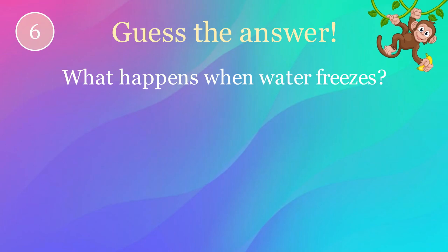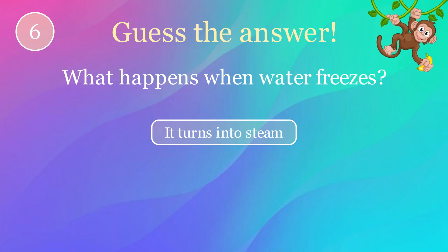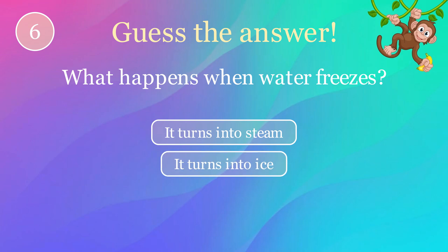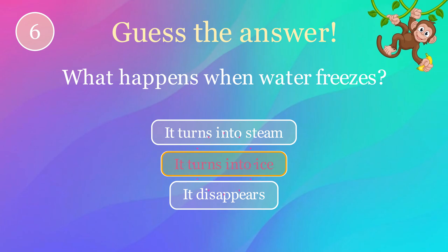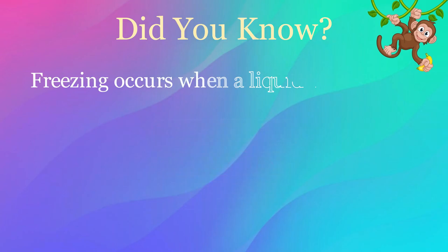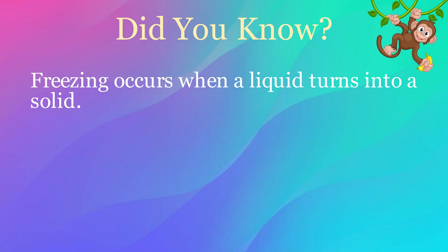What happens when water freezes? Options: it turns into steam, it turns into ice, it disappears. The correct answer is it turns into ice. Here's an interesting fact: freezing occurs when a liquid turns into a solid.